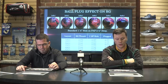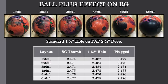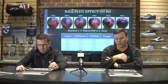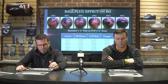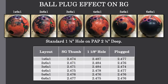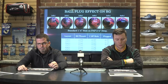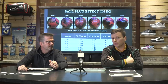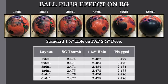Let's look line by line. On the one by six by one, since it's a one-and-an-eighth-inch hole on the PAP drilled two-and-a-half inches deep, it's only going to be one inch away from the pin. Take a look at the switch grip thumb column — that's prior to a balance hole, so no balance hole, and we're at about 247. Once we put that balance hole in, we go up quite a bit to 248. When we plug it, we get a majority of those dynamics back — not exactly how it was, but about three-quarters of the way there — and that's pretty much the trend across all of them.